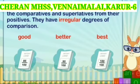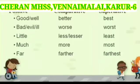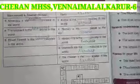There are some adjectives that do not form the comparative and superlative from their positives. They have irregular degrees of comparison. For example: good, better, best. Well, better, best. Bad, worse, worst. Little, less/lesser, least. Much, more, most. Far, farther, furthest.